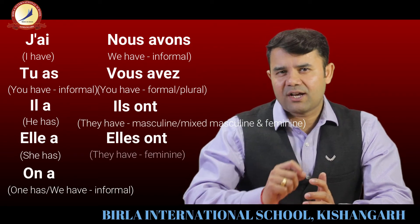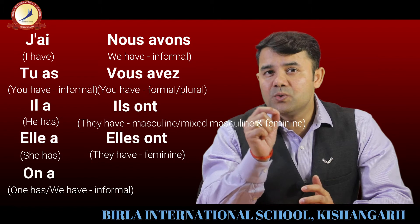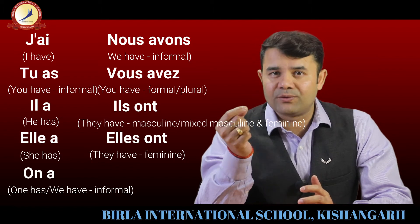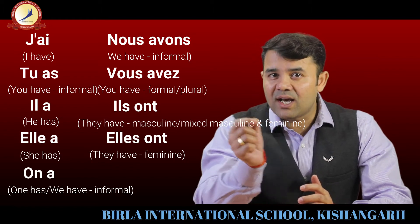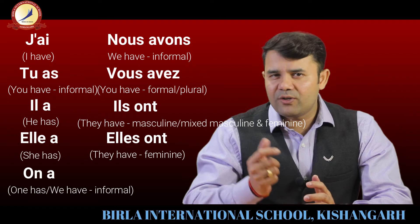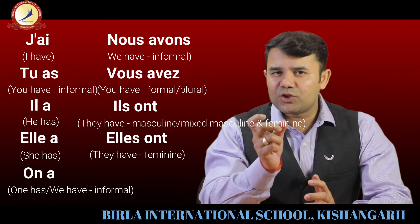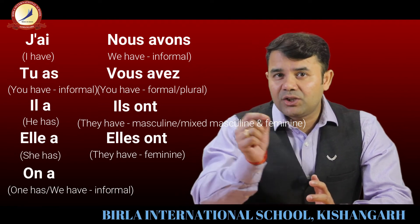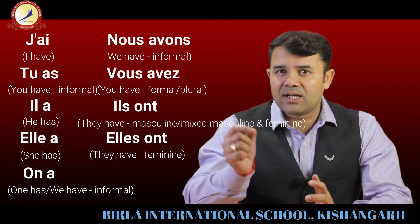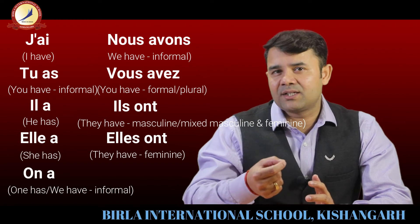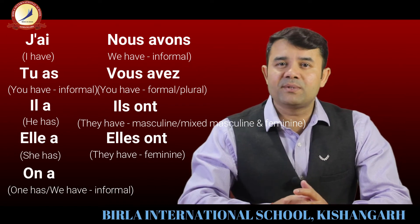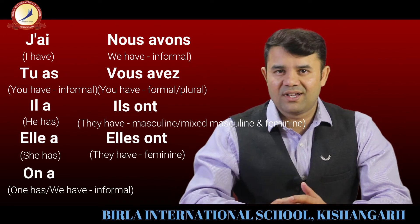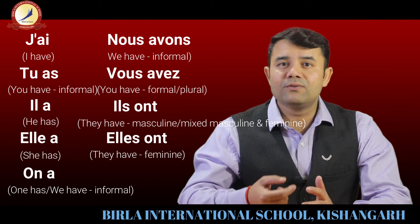Here you must have noticed — we are pronouncing 'nous avons' rather than 'nous avons' separately, because it has a liaison. In French, just to make the right or good pronunciation, they do that liaison. So rather than speaking 'nous avons' separately, it becomes 'nous avons' and 'vous avez'.